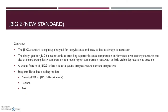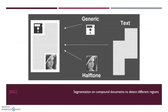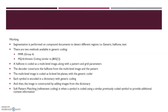We have JBIG-2, which is the newer standard version and completely free. It can be used for lossy, lossless or lossy-to-lossless compressions, and it again has the segmentation quality because it provides generic, halftone and text encoding differently. Consider a document: there is some generic set of data already present in the dictionary, there is textual data, and there is halftone data. It uses different techniques for different parameters. The halftone may be coded with a multilevel image along with pattern and grid parameters. It will use a dictionary for already known items, encode the symbol with the help of this dictionary, and soft pattern matching or refinement coding is used when a symbol is coded using a similar previously coded character.